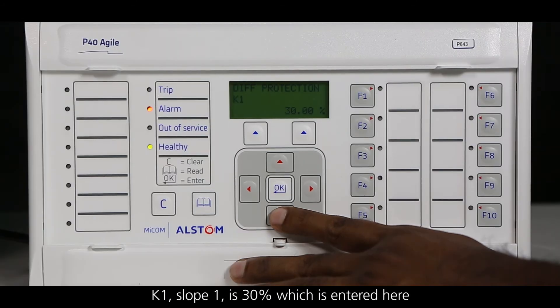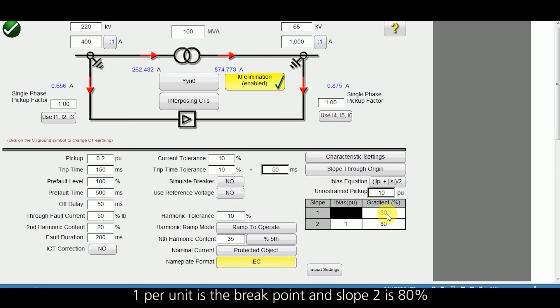K1, slope 1 is 30 percent, which is entered here. 1 per unit is the breakpoint, and slope 2 is 80 percent. The characteristics equation is I1 plus I2 by 2.